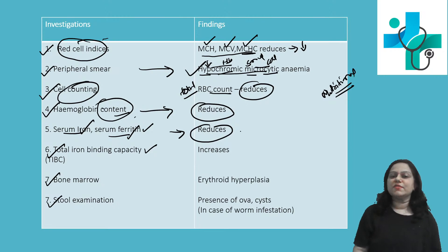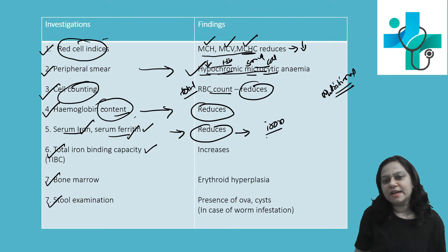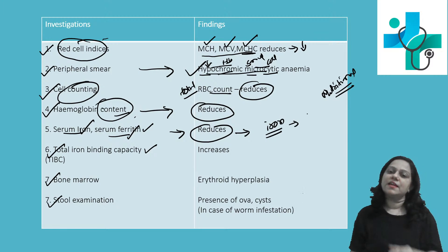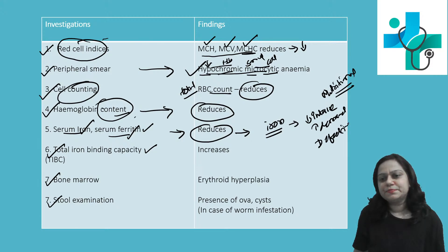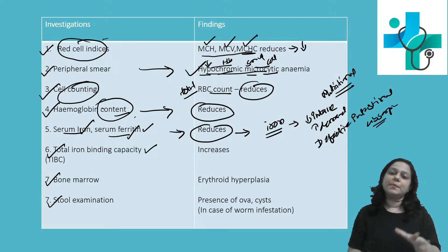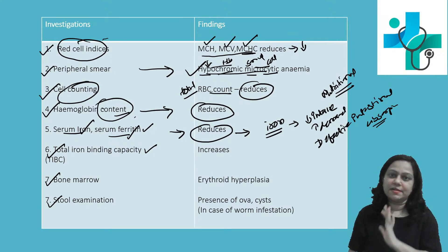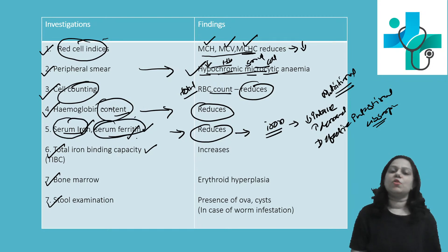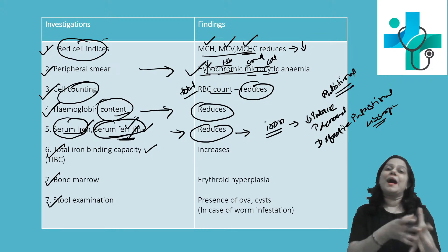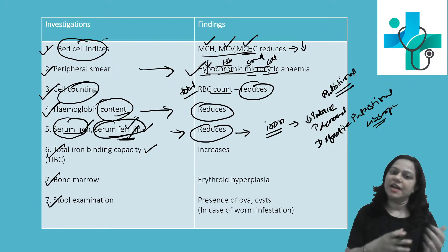Serum iron and serum ferritin level will be reduced in iron deficiency anemia. The deficiency of iron can be due to decreased food intake, increased body demand, or defective intestinal absorption. Whatever the reason, the ultimate result is that iron content is less — so serum iron level will be less, and serum ferritin level, which is the bound form of iron, will also be less.